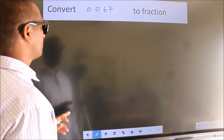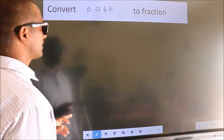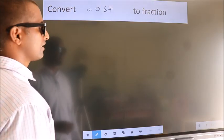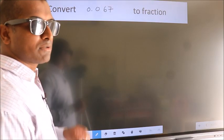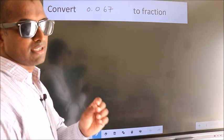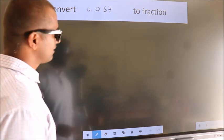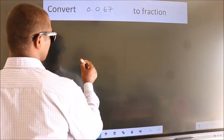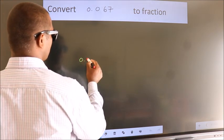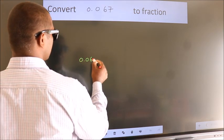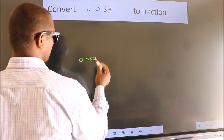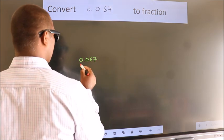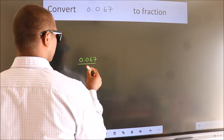Convert 0.067 to a fraction. Given is 0.067. We now take it as 0.067 by 1.